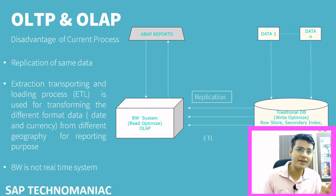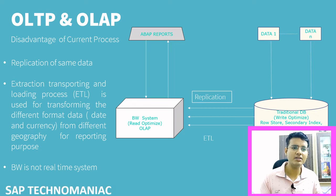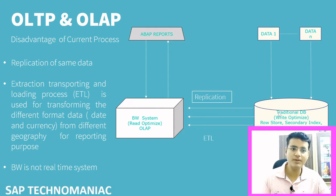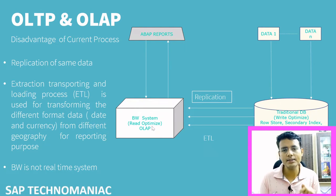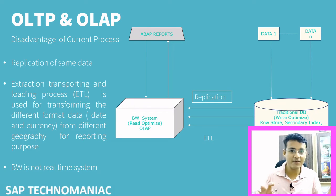Previously, we were having the ECC system separate and a data warehouse BW system separate. In the ECC system, we had only the latest data — one or two years — where we are doing day-to-day transactions like delivery creation and purchase order creation. And we had one BW system where we stored the historical data. To move data from ECC to BW, we used ETL processing — Extraction, Transformation, and Loading. We put the data in a utilization form and loaded all the data. The disadvantage is that we are having the same data in two different databases — one efficient for transactional processing and one for reading and analyzing — so we are having multiple footprints of the same data, which is not a good thing.